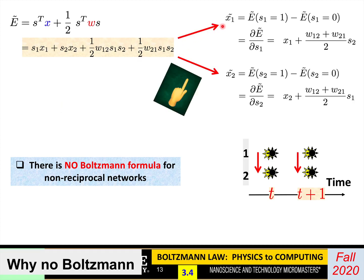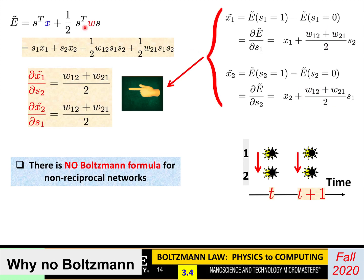If you now calculate the synaptic functions — x1 tilde that determines the state of neuron 1, or x2 tilde that determines the state of neuron 2 — the way you do it is by taking the derivative of the energy function with respect to s1 or s2. You'll find that the coefficient you get for how x1 is affected by s2 is exactly the same as how x2 is affected by s1. But in a Bayesian network, we want to keep one non-zero while getting rid of the other — so the influence goes one way. If you start from an energy function, you get the same factor in both places, and this is not an accident.